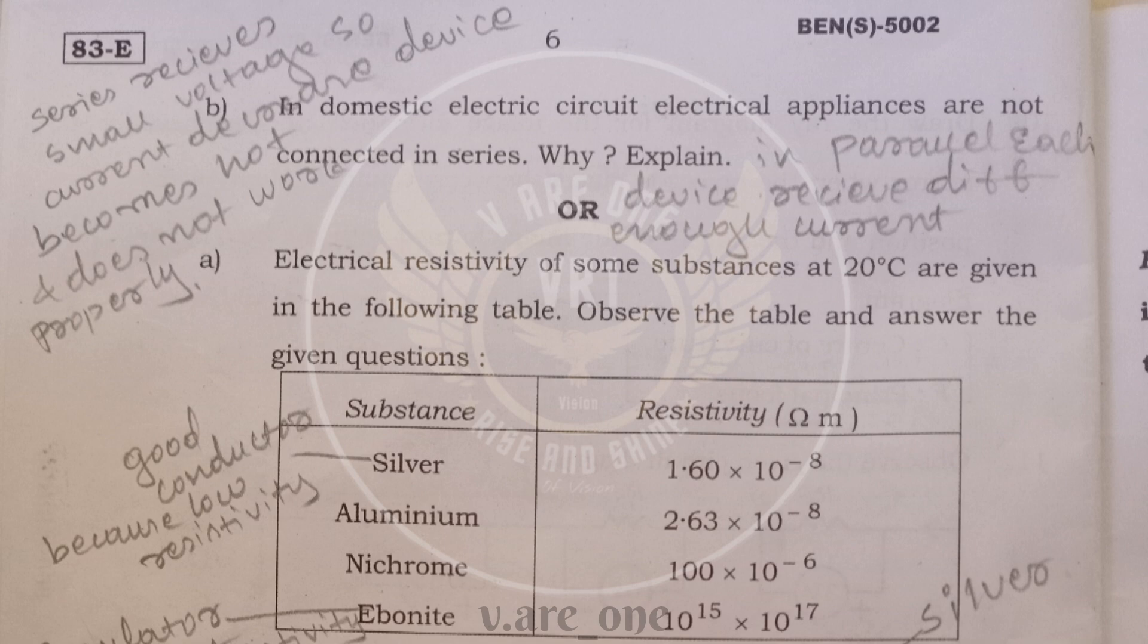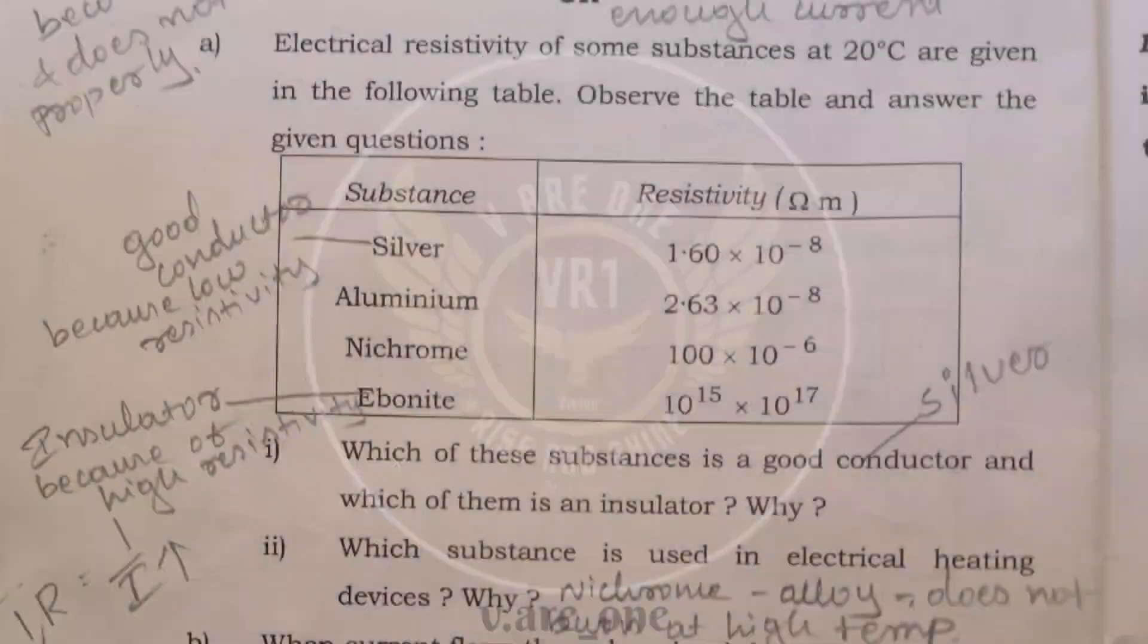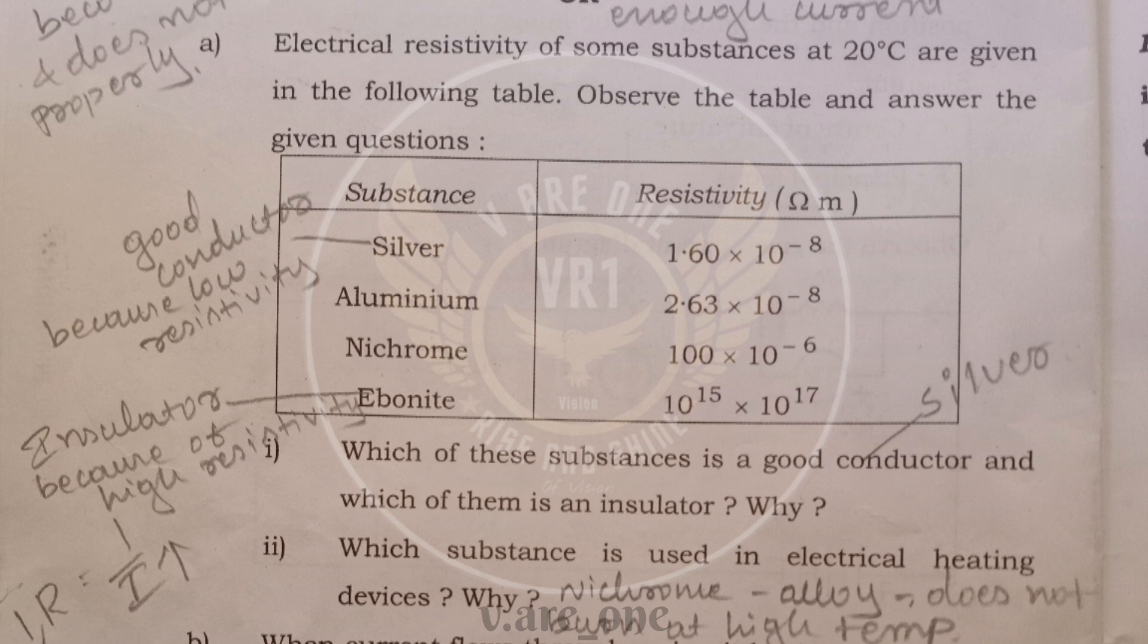And we have option for this question. A. Electrical resistivity of some substance at 20 degrees Celsius are given in the following table. Observe the table and answer the given questions. According to this table silver is the good conductor because of low resistivity. And ebonite is the insulator because of high resistivity. And second question which substance is used in electrical heating device. We use nichrome because it is an alloy and it does not burn at high temperature. It is having high resistance.